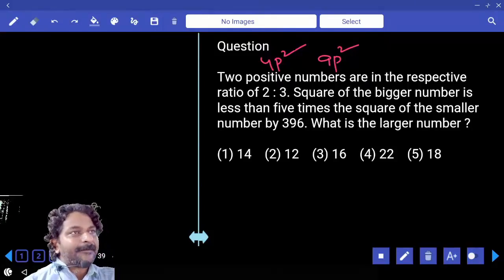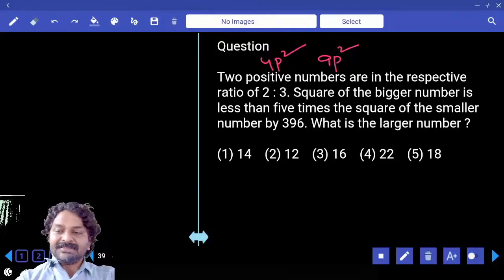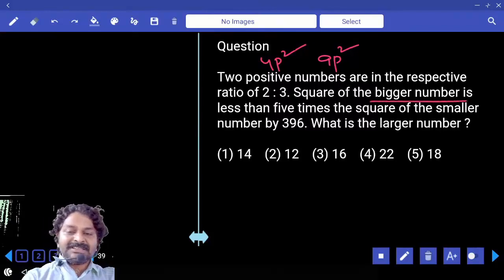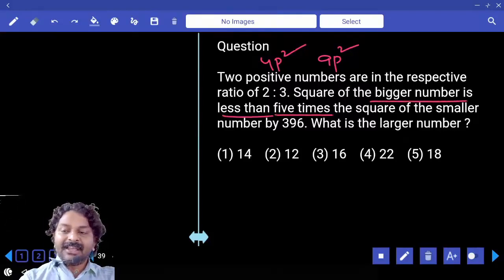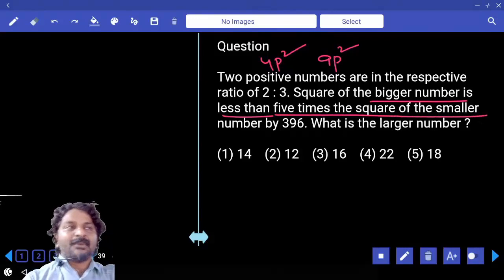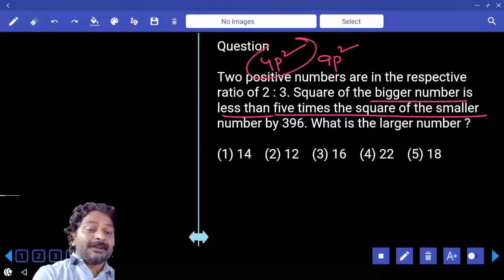Now the condition is: square of the bigger number is less than 5 times the square of the smaller number. What is 5 times the square of the smaller number?